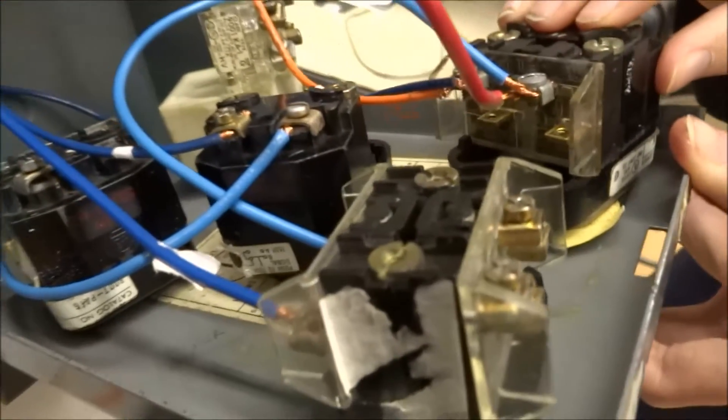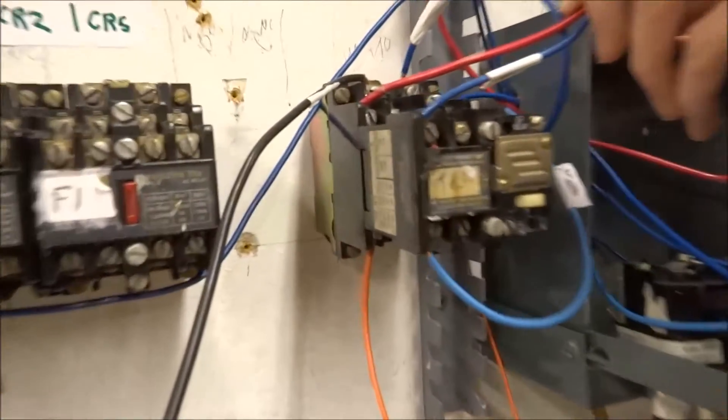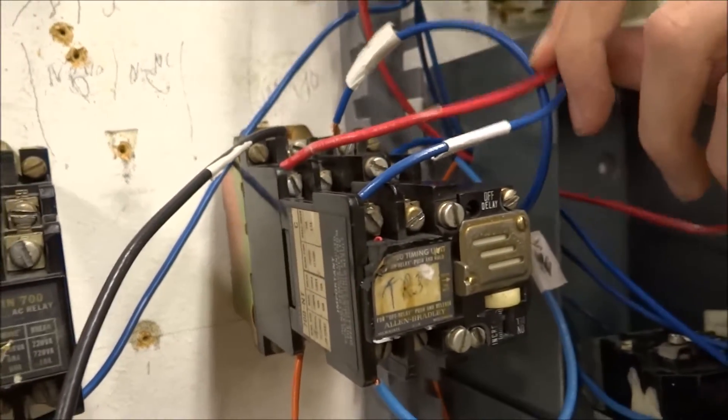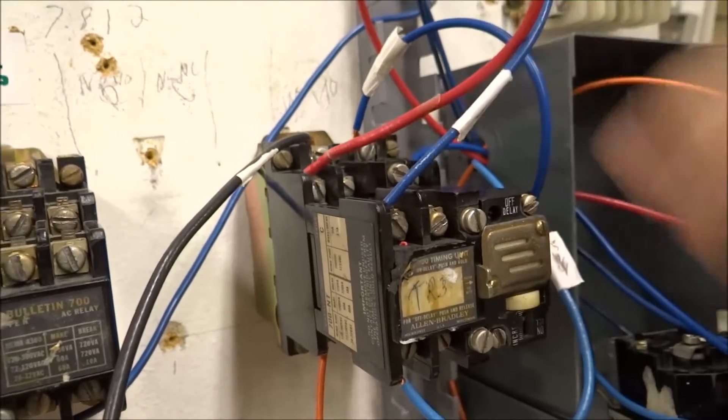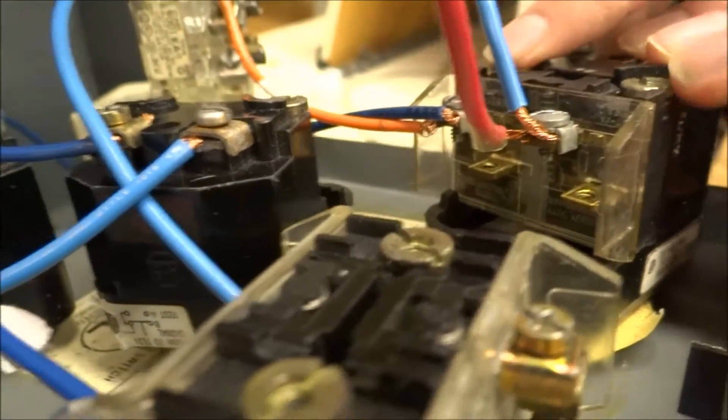Then in order to create the memory, take 3, go into the normally open contact in the timed relay. But we're just using the relay part for this one. And then at the bottom, which is the orange, the orange comes all the way back into the start button. And we're going to create the orologic memory.